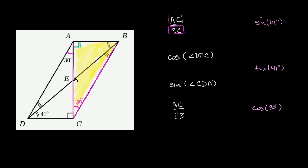Now, how do these sides relate to the 30-degree angle? Side AC is adjacent to it — it's one of the sides of the angle that is not the hypotenuse, so this is adjacent. BC is the hypotenuse of this right triangle — it's the side opposite the 90 degrees. So what trig function, when applied to 30 degrees, equals the adjacent side over the hypotenuse?